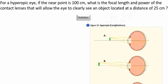In figure 29A here, we see that we have an object at a distance of 25 centimeters that we want to see clearly. Currently, at this distance in the hyperopic eye, we know that the image is blurry as it focuses behind the retina.